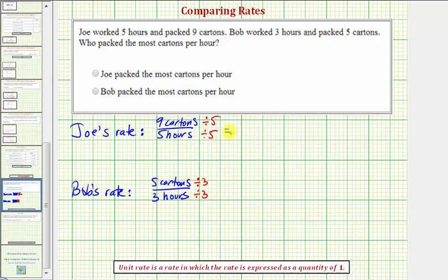So Joe's unit rate would be nine fifths cartons per one hour. And Bob's unit rate would be five-thirds cartons per one hour.